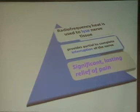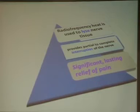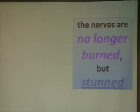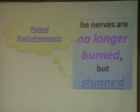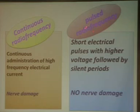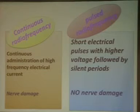The radiofrequency machine produces both an electric field and a thermal field. I can use the electric field, which is not destructive, for nerves whose function I want to preserve. For nerves I want to destroy, I use the heat — it is like a computer with two modes. The difference between continuous thermal radiofrequency and pulsed radiofrequency is that continuous current causes nerve damage, while pulsed radiofrequency delivers short electrical pulses with higher voltage followed by silent periods, so the temperature never exceeds 40°C. This way I get the effect without nerve damage.